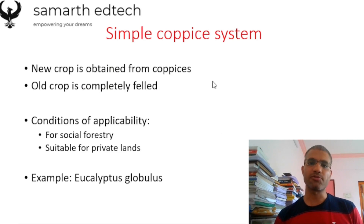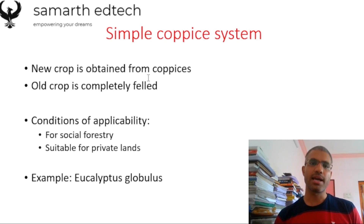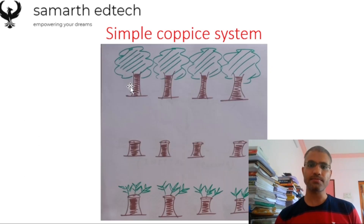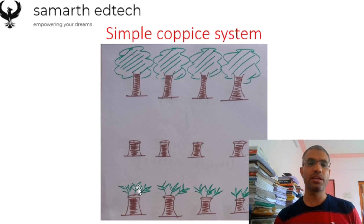The first subtype is the Simple Coppice System. The new crop is obtained from the coppice — the entire forest region is cut down and the new trees or new shoots start growing from the coppice. From the diagram: initially the forest was like this, then you start cutting down the entire forest and only the stumps remain, and from these coppices the new shoots start growing up.